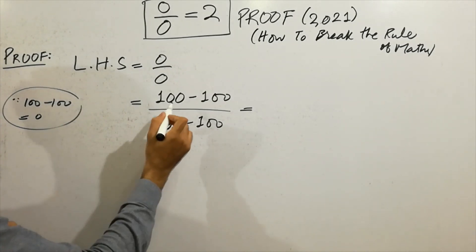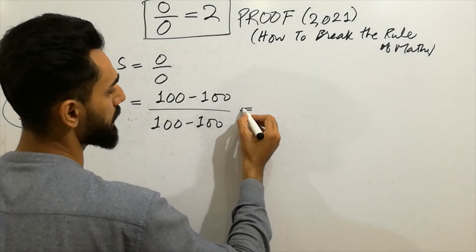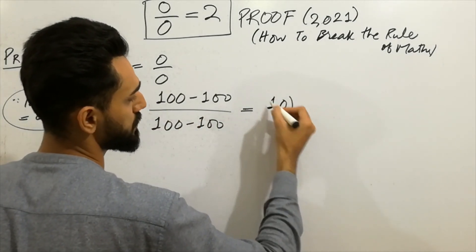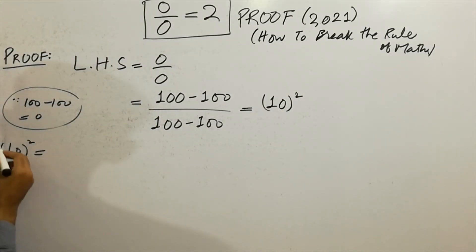Now you can write here 100. This is always equal to zero because 100 minus 100 is zero. Next step: now you can write here 100 as it is 10 squared, because 10 squared always equals 100.